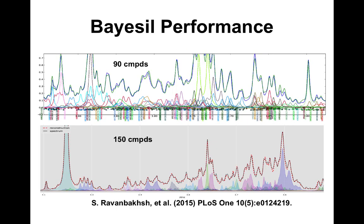You can get complex spectra — the top example has 90 different compounds, with different colored peaks beneath it all fitting together to produce an almost perfect match to the observed spectrum. This is why it would take an untrained person many hours to fit all those peaks — and 90 compounds is nothing compared to 150.